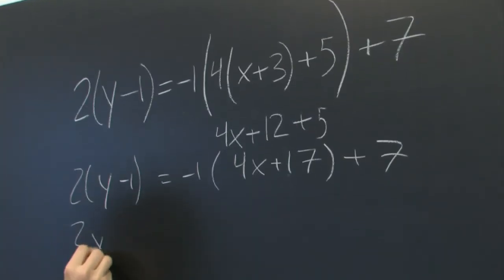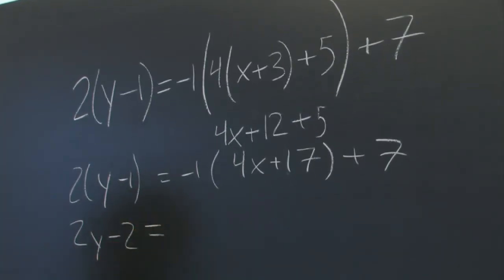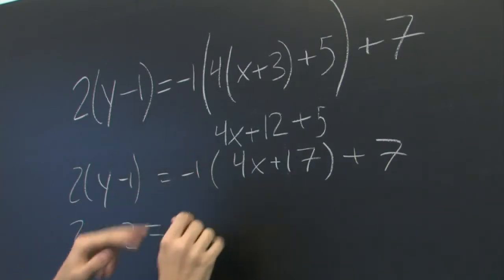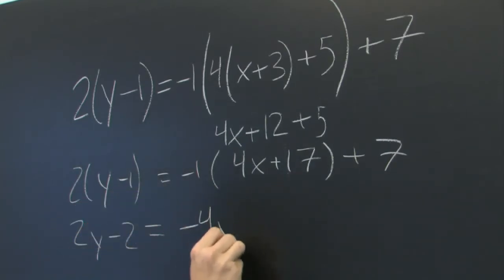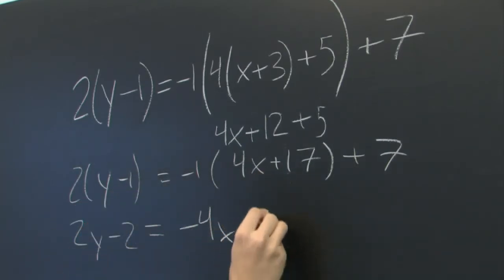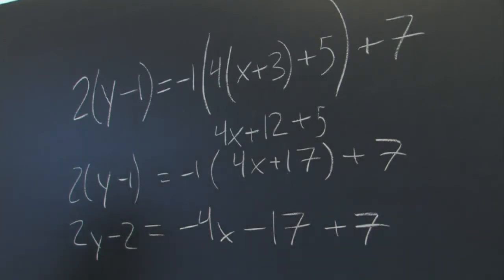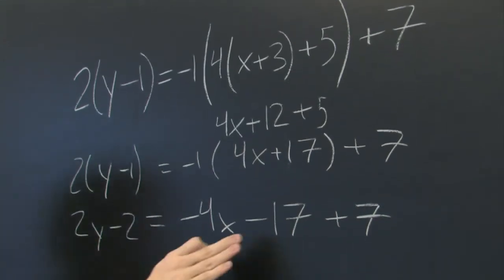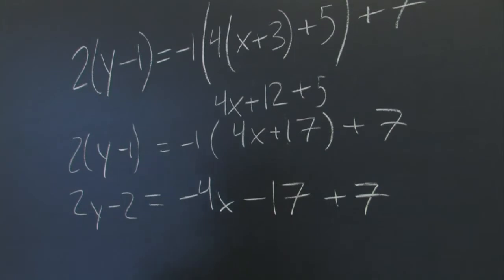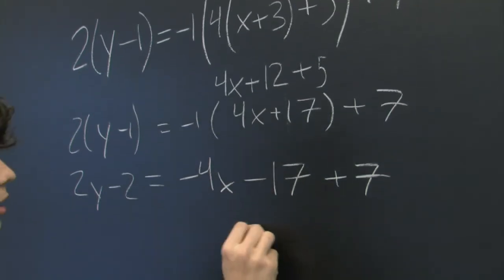We get 2y minus 2 equals negative 4x minus 17 plus 7. Okay. Let's combine the negative 17 and the plus 7 and we get negative 10.